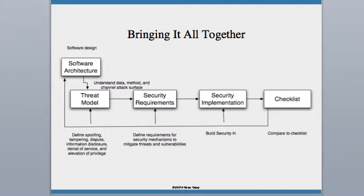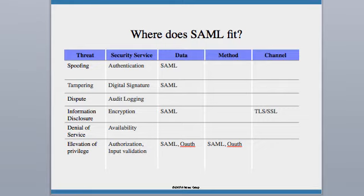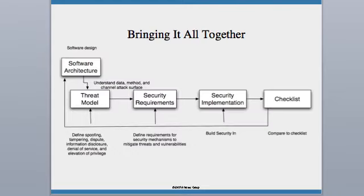My basic process of doing software security starts with taking a software architecture, building the threat model, and figuring out what to build into the system. But at the end of all of that, the objective measurement of the checklist should feed back requirements you can use to improve your process. So a threat model might say we're using SAML, OAuth, and SSL to mitigate some threats — but that should still be judged against a checklist to see if it meets the criteria of the organization.